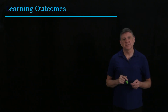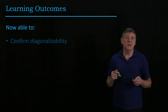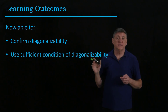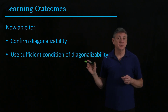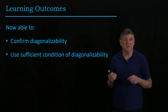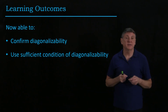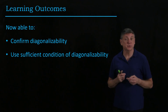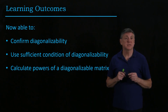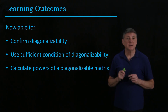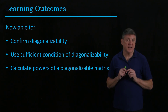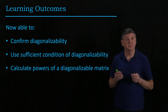Let's summarize what we've learned. We're now able to confirm whether a matrix is diagonalizable or not. We can use sufficient conditions — such as all distinct eigenvalues — to determine diagonalizability. We're able to calculate powers of a diagonalizable matrix, and in particular we're able to calculate the square root of a matrix, which is perhaps a concept we didn't have before going through this material.